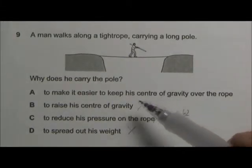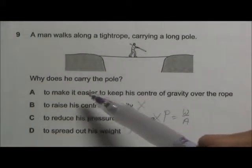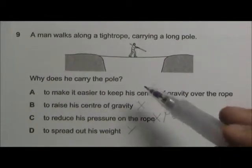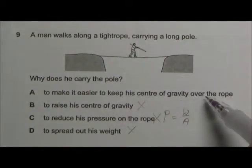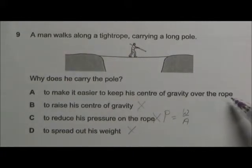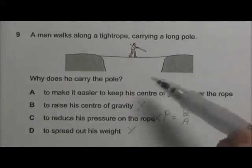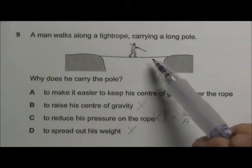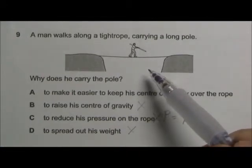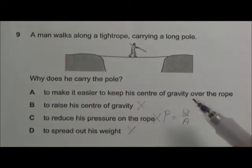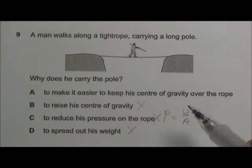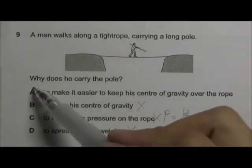That leaves us with option A, to make it easier for him to keep his center of gravity directly above the rope. By carrying the long pole, he can actually just shift the pole to the left or to the right as well as to adjust his center of gravity to make sure that he is always on top of the rope. So the answer is A.